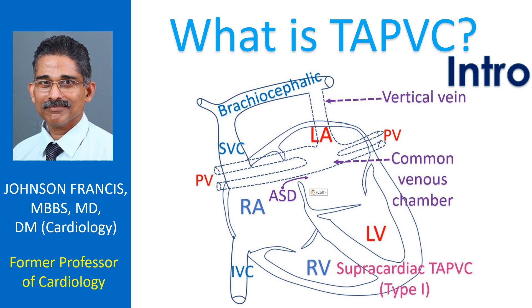TAPVC stands for Total Anomalous Pulmonary Venous Connection, also known as TAPVD or Total Anomalous Pulmonary Venous Drainage. Normally, pulmonary veins join the left atrium. When they drain to the right atrium through one of the blood vessels leading to the right atrium, it is known as TAPVC. If only some of the four pulmonary veins join the right side of the heart, it is called PAPVC, or Partial Anomalous Pulmonary Venous Connection.